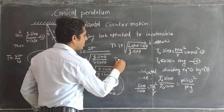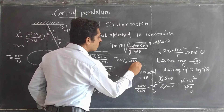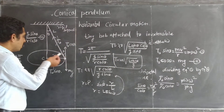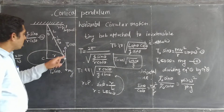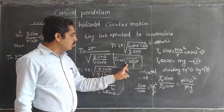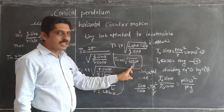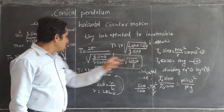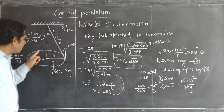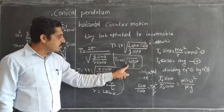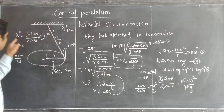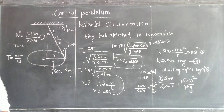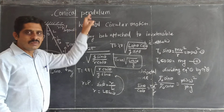After substitution, sin theta cancels and the final result is T equals 2π times the square root of l·cos theta over g, where l is the length of the string. As l increases, the period also increases. From this equation we can also easily calculate the angular velocity of the bob. This completes the conical pendulum topic.